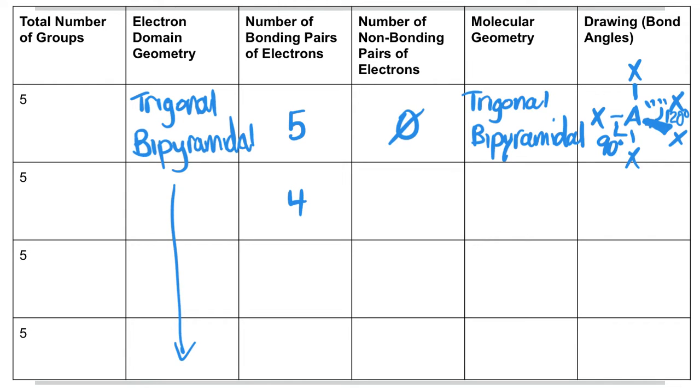Our second one based on this electron domain geometry is four bonding pairs, one non-bonding pair. This is actually my favorite shape, it's called seesaw. And if we were to draw it, let's go central atom, one going up, one going down, we'll have a lone pair of electrons here, and then we'll draw the other two, one going out, one coming in. The reason it's called seesaw is because if you were to tip this up onto its side, it actually creates like a little seesaw.